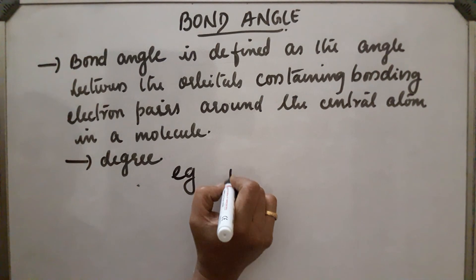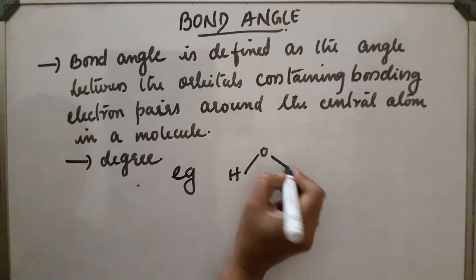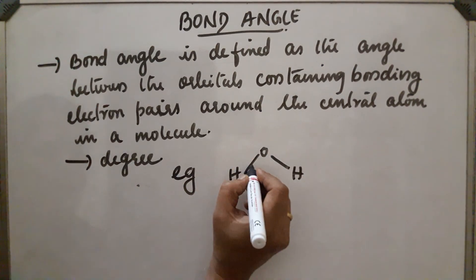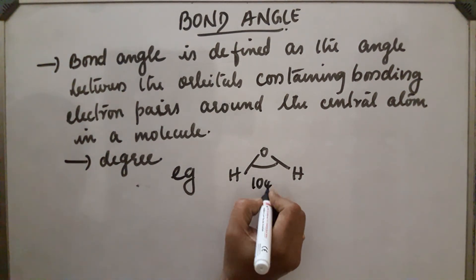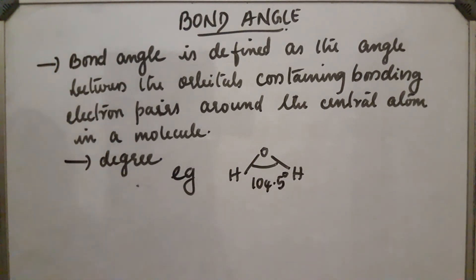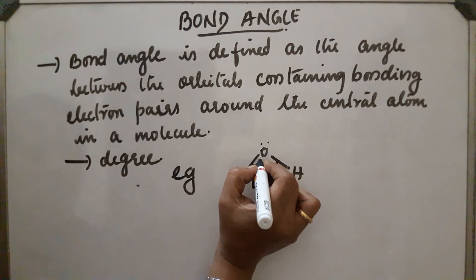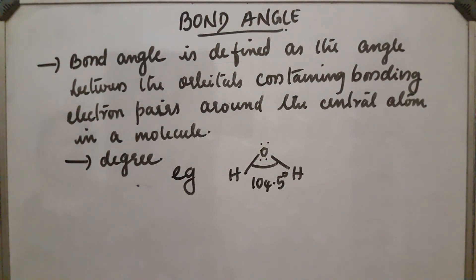For example, in a water molecule with a V shape, the angle between the orbitals of the two bonding electron pairs is found to be 104.5 degrees. It contains two lone pairs. This bond angle helps determine the shape of the molecule.